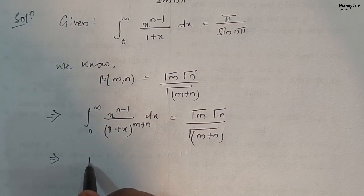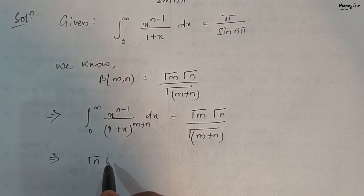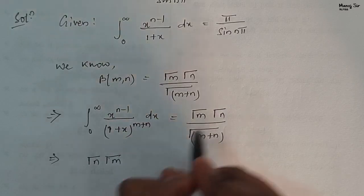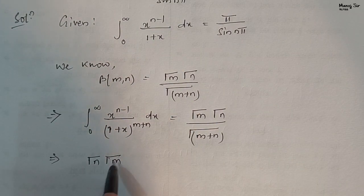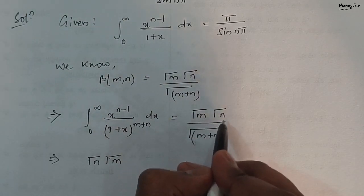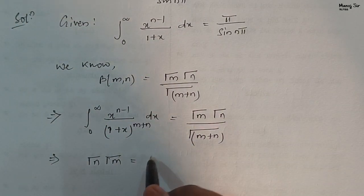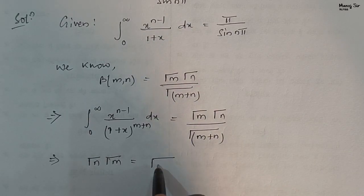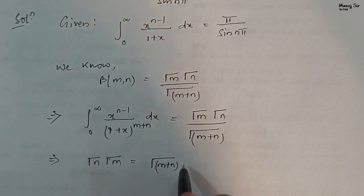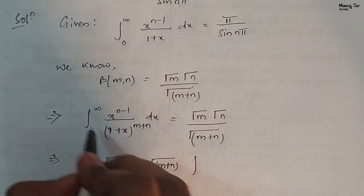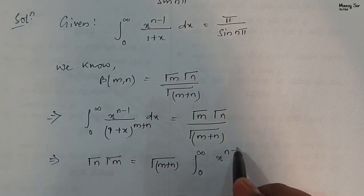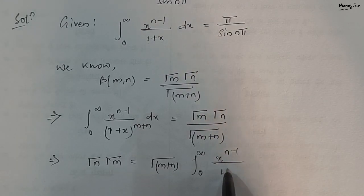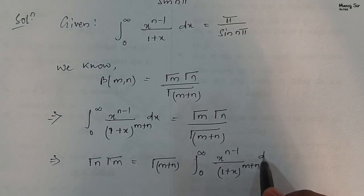We can write — changing the order since both are equal — gamma(n) gamma(m) equals gamma(m plus n) times the integration from 0 to infinity of x to the power n minus 1 upon 1 plus x to the power m plus n dx.